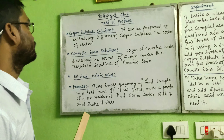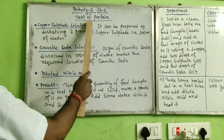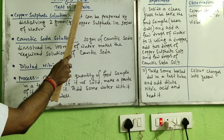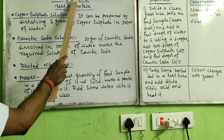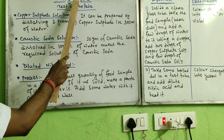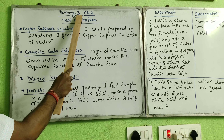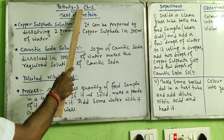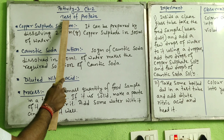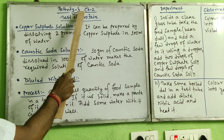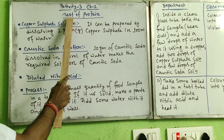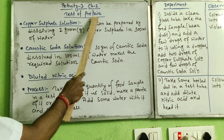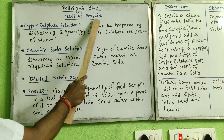Let's come to the main point. This is activity number three from chapter two. First it was the test of starch, then the test of another form of carbohydrate like sugar, and this is totally different — it is not carbohydrate, it is another component of food called protein. So, test of protein.